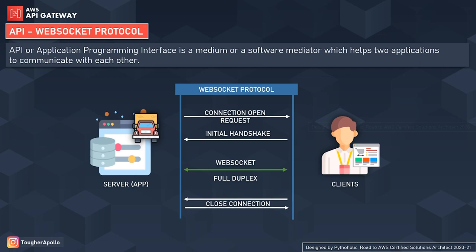With WebSocket API, TCP is a full duplex two-way communication channel. Unlike HTTP or REST, we don't wait for the client's or server's response — the client and server talk independently over a single TCP connection. In WebSocket, you have a connection open request completed with an initial handshake. Once open, you can send bi-directional messages persistent over the connection. If either party closes the connection, it ends the communication channel entirely.